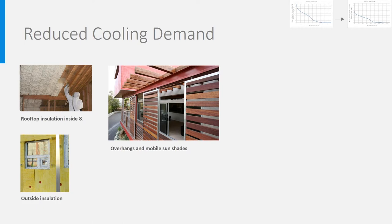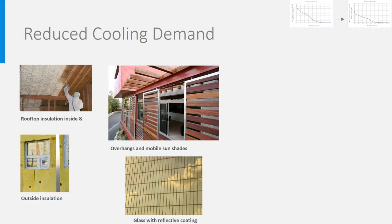Strategies to reduce the cooling demand are therefore the systematic use of overhangs above windows and outdoor solar shades. The use of coated glass with a low G factor, like reflective glass, can also be recommended.